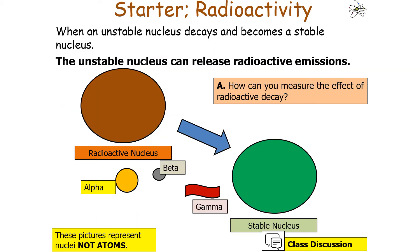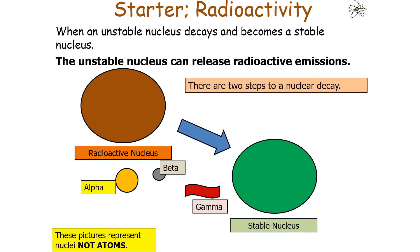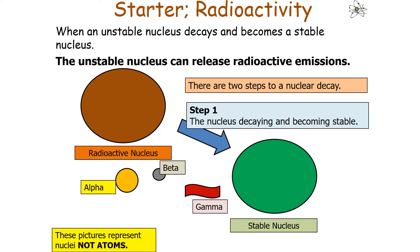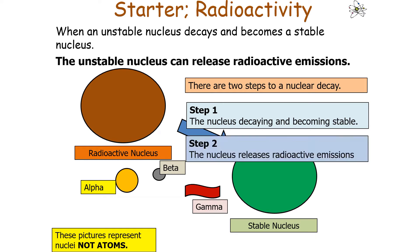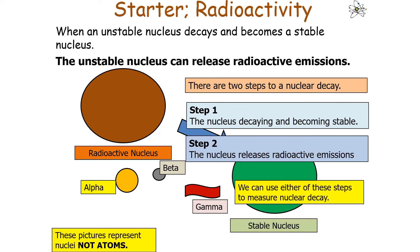When an unstable nucleus decays and becomes a stable nucleus, it can release radioactive emissions of either alpha, beta, or gamma. You can measure this effect of radioactive decay by considering two steps: step 1, the nucleus decaying and becoming stable, and step 2, the nucleus releasing radioactive emissions as it does this. We can use either of these steps to measure nuclear decay.